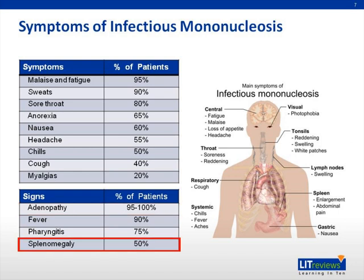Splenomegaly, on the other hand, is only present 50% of the time, so its absence does not reduce your suspicion for mono. However, if you do find splenomegaly, it's much more likely to be mono, as the common cold or the flu would not give you splenomegaly. Fever and pharyngitis — redness in the back of the throat — are also key signs to look for.